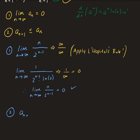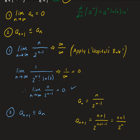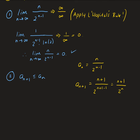Let's look at the second condition. We have to show that the n plus 1 term is less than or equal to the nth term. The nth term was n over 2 to the n minus 1. So we want to get the n plus 1 term — we just substitute n plus 1 for n. On top we get n plus 1 divided by 2 to the n plus 1 minus 1, which leaves us with n plus 1 divided by 2 to the n. So we want to show that n plus 1 over 2 to the n is less than or equal to n over 2 to the n minus 1, for all n going from 1 to infinity.